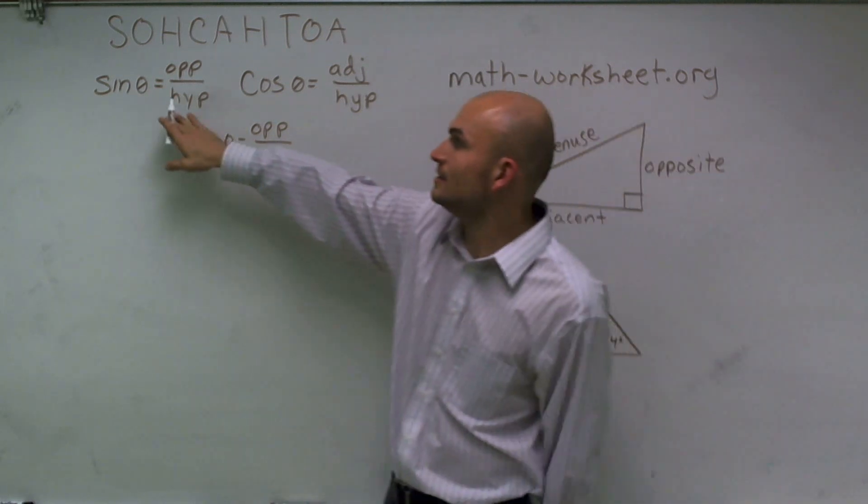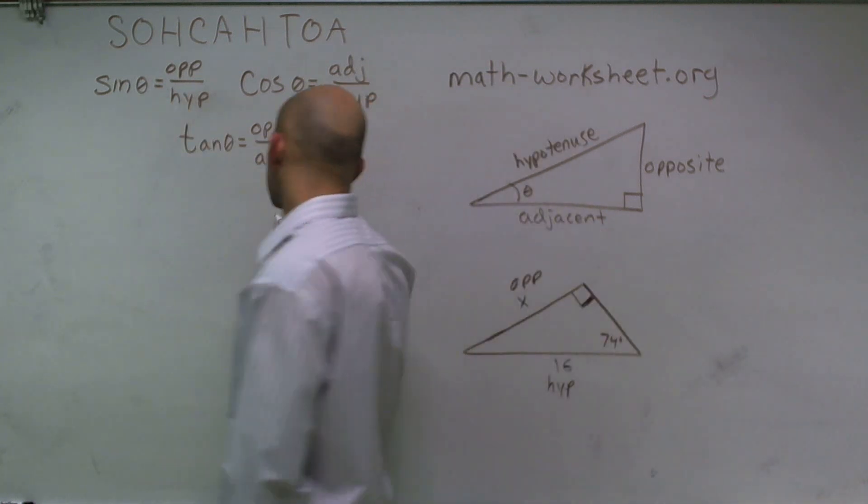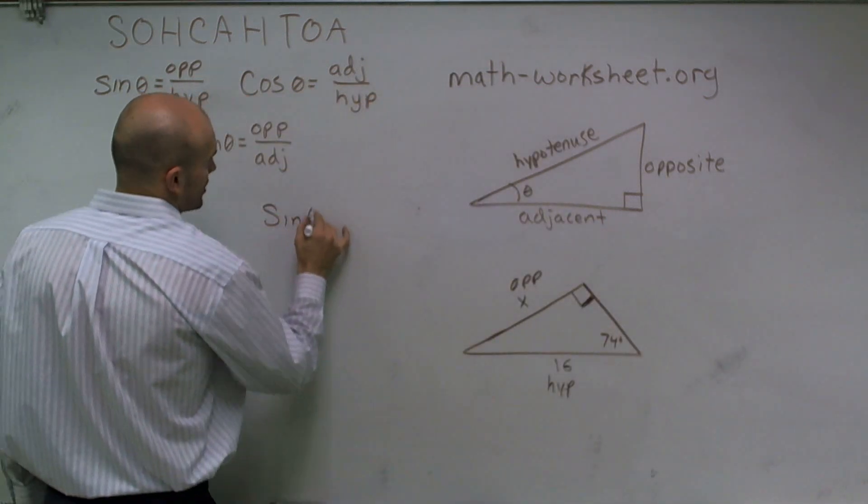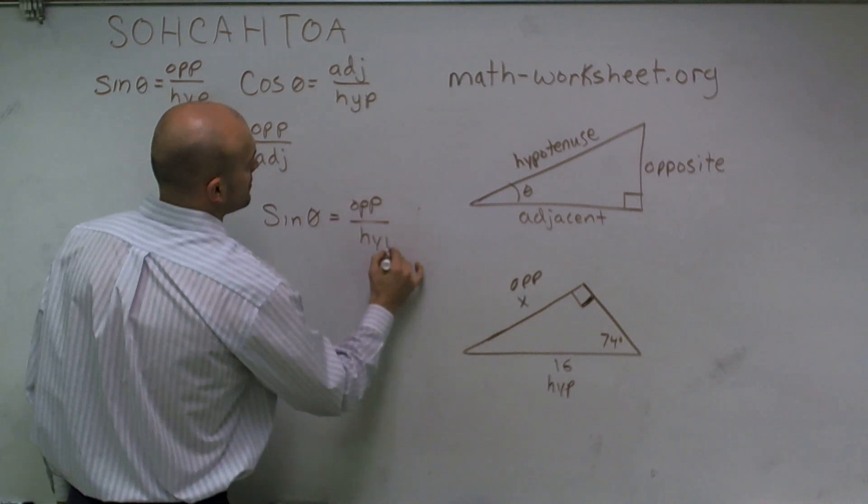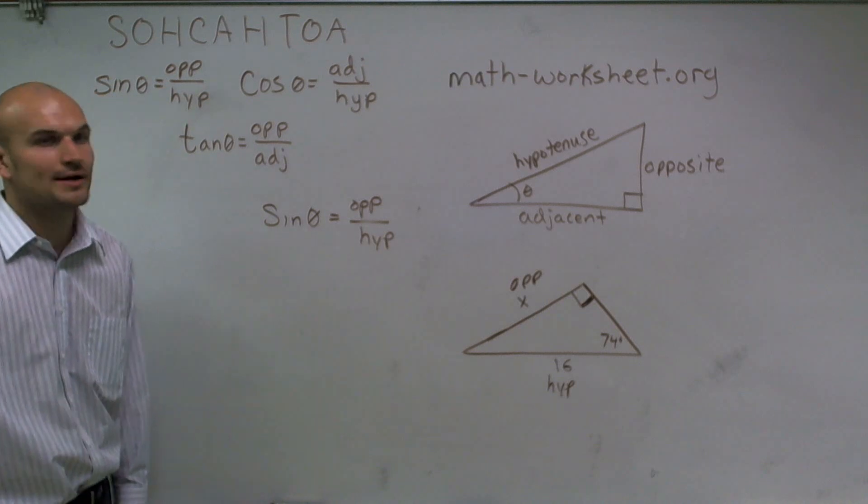The best choice is going to be sine. So sine of theta equals opposite over hypotenuse.